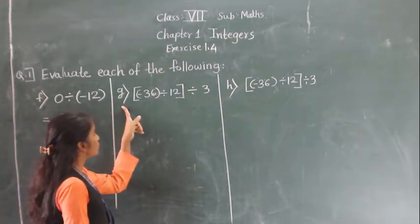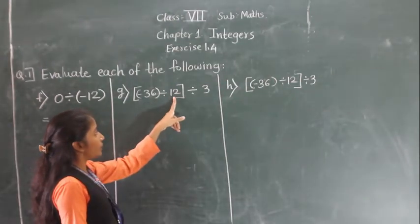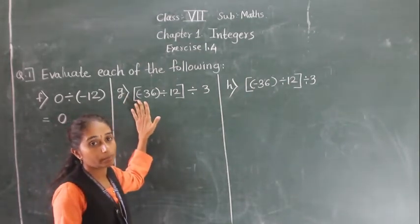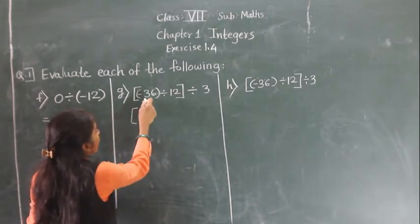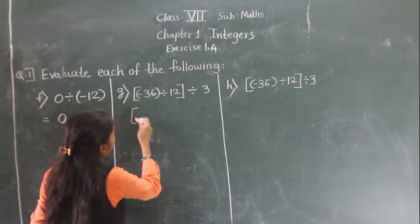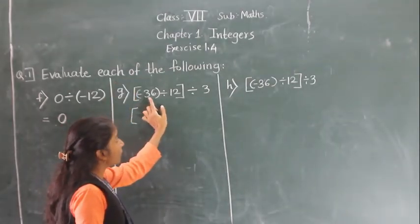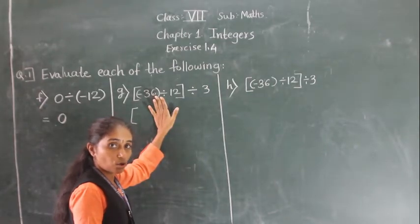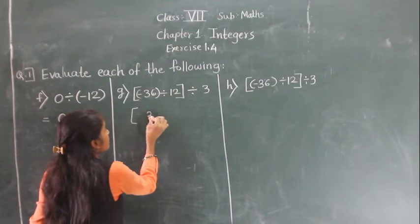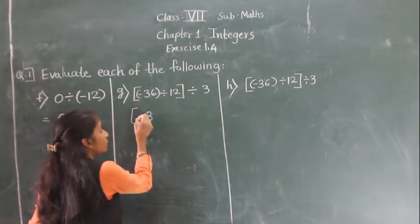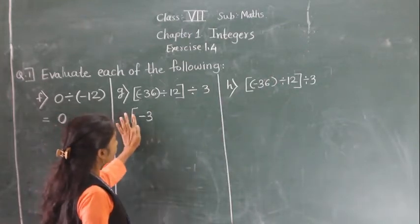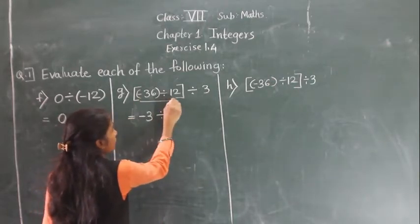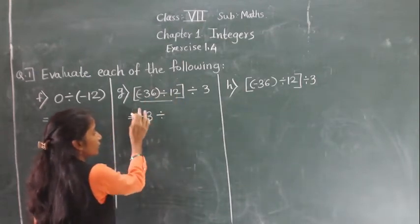Part (g): (minus 36 divided by 12) divided by 3. We solve the bracket first. When dividing a negative integer by a positive integer, we divide as whole numbers — 12 threes are 36 — and put a minus sign before the answer. So the bracket gives minus 3.